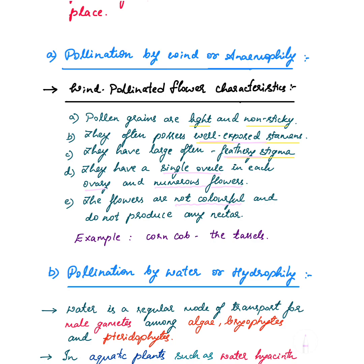There is no necessity of producing nectar in wind pollinated flowers because neither insects nor any other organism is feeding on them — only the abiotic factor is involved. These characteristics of wind pollinated flowers can be asked for three marks or sometimes five marks in the part B section.